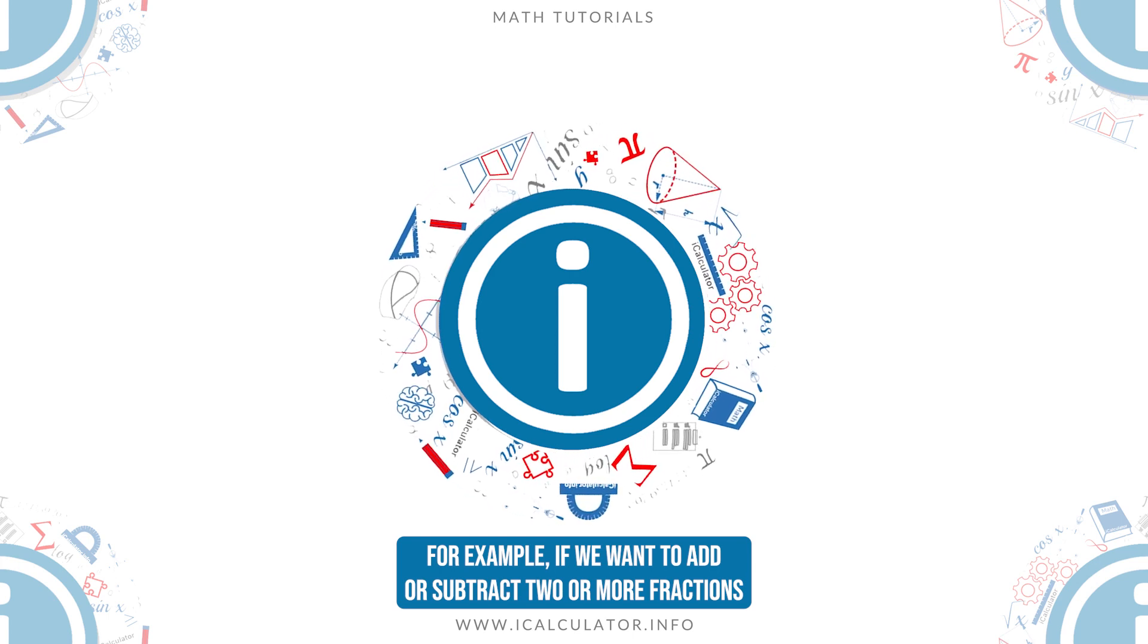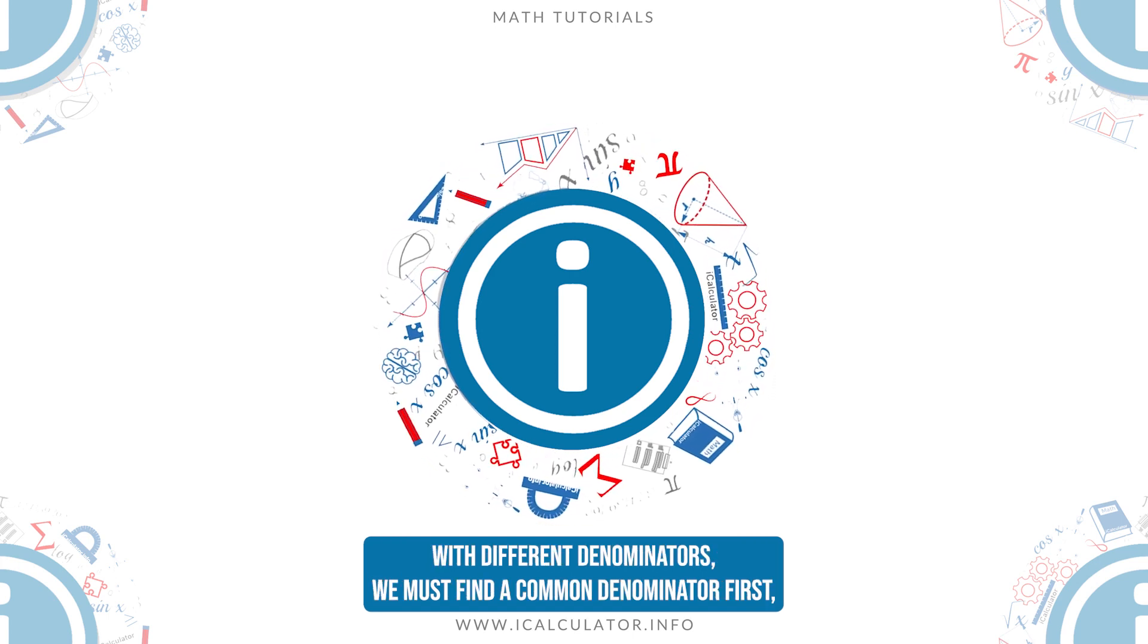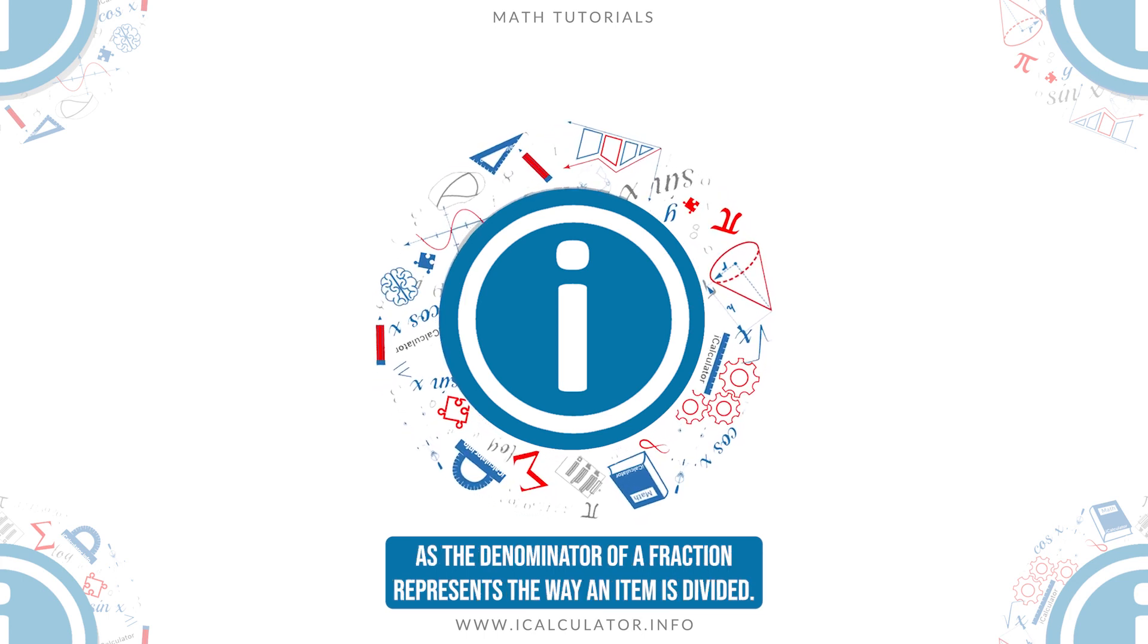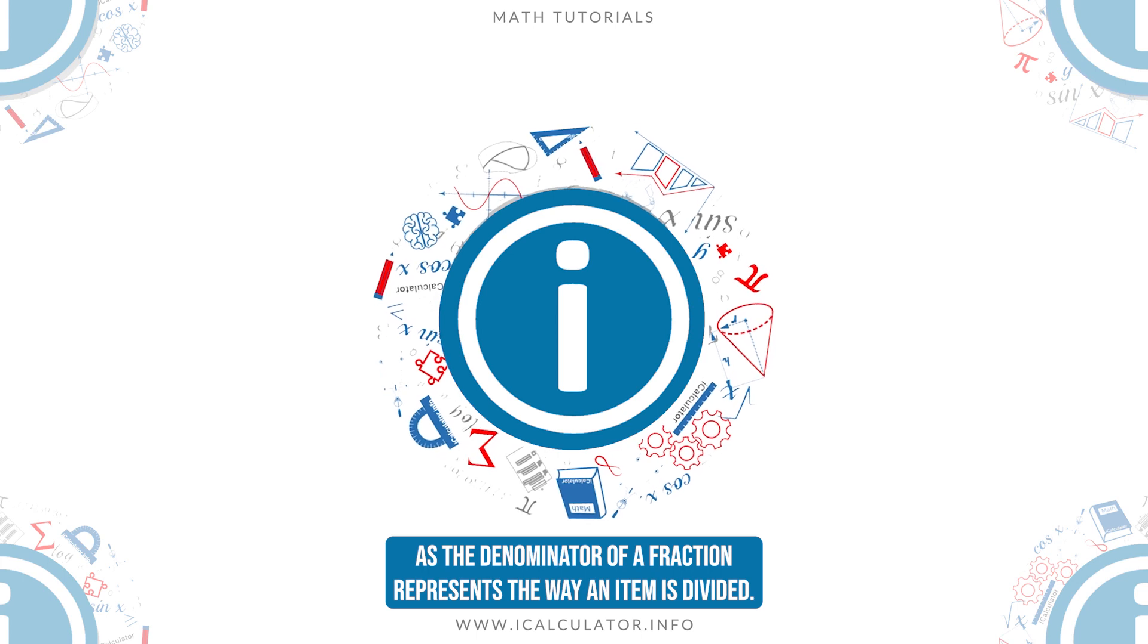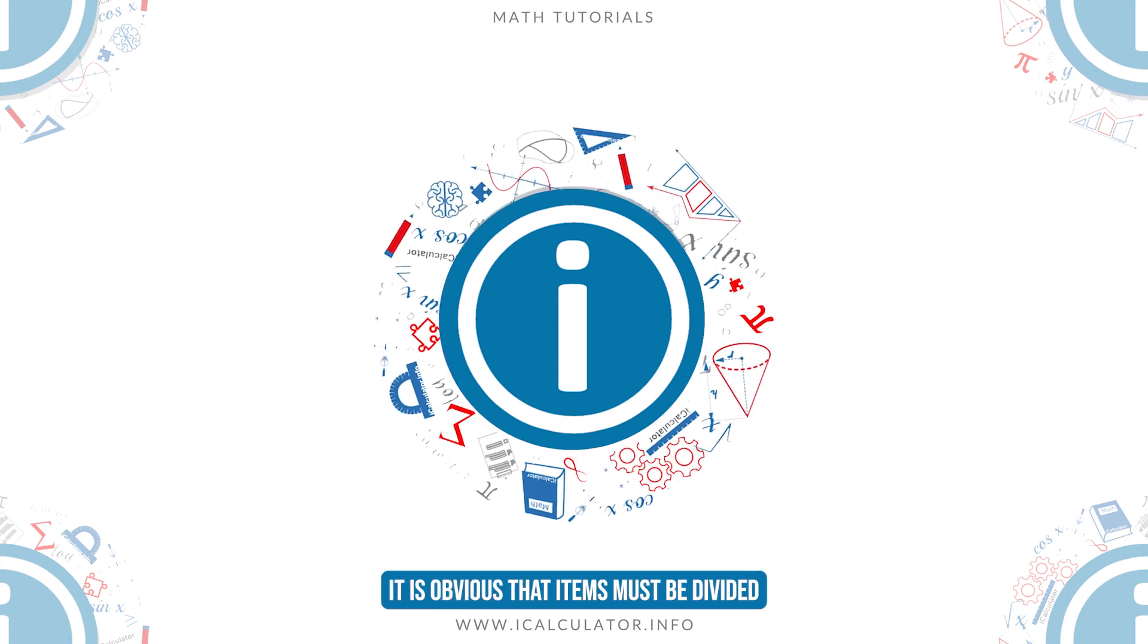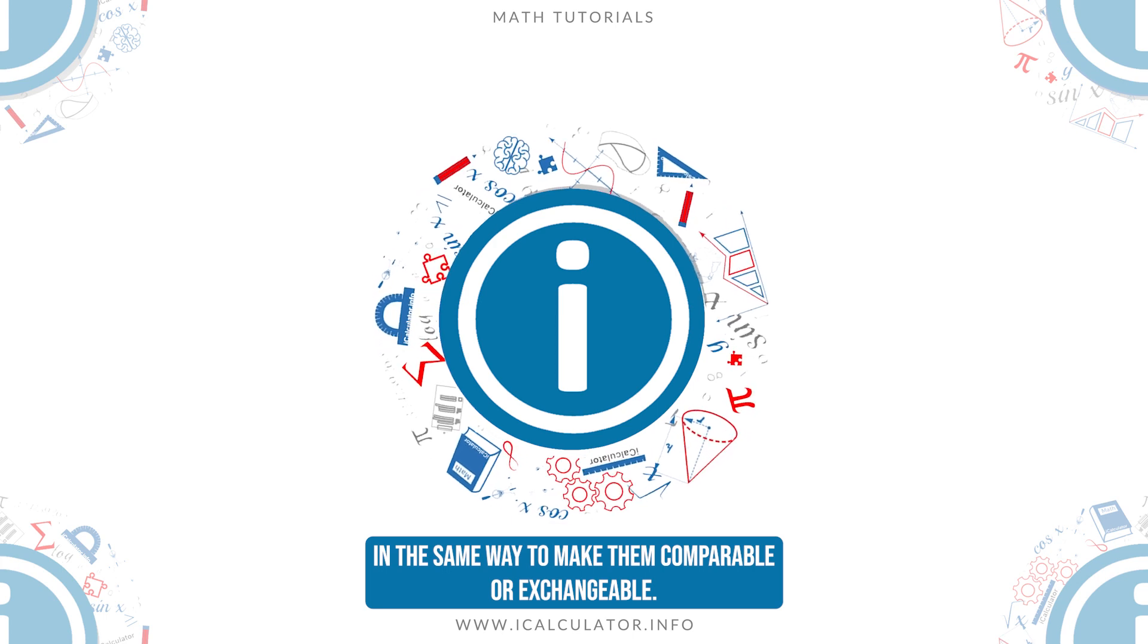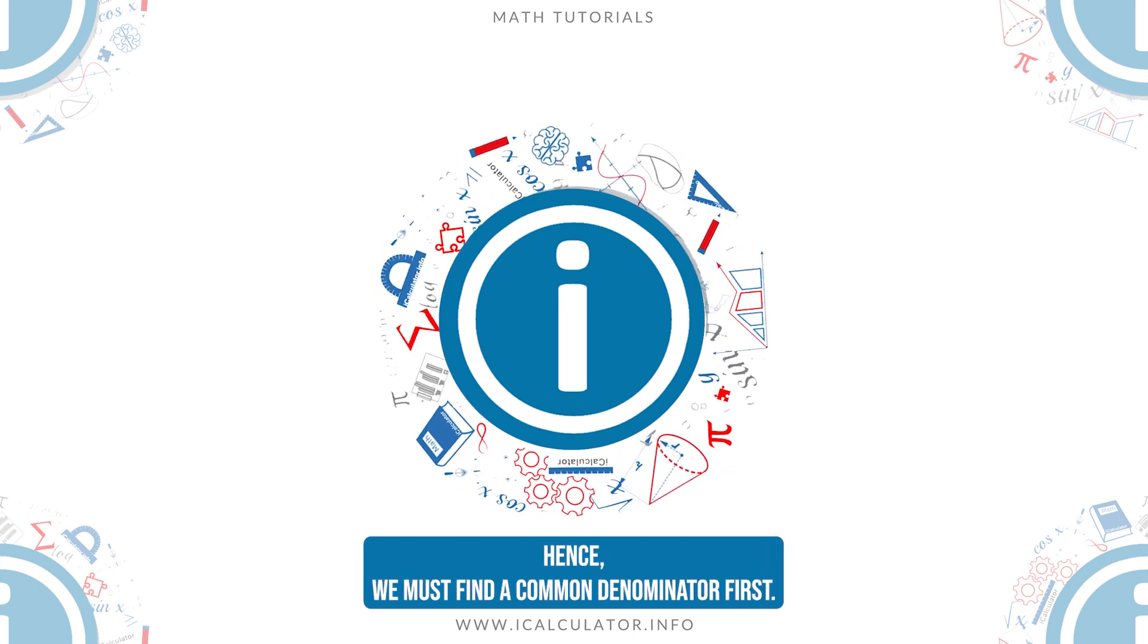if we want to add or subtract two or more fractions with different denominators, we must find a common denominator first, as a denominator of a fraction represents the way an item is divided. It is obvious that items must be divided in the same way to make them comparable or exchangeable. Hence, we must find a common denominator first,